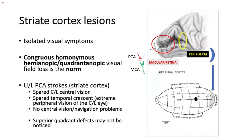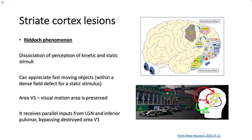If a lesion involves only the deepest part of the occipital lobe — subserving the most peripheral vision — it may lead to monocular vision loss in the contralateral eye, involving only the temporal crescent. This occurs because the temporal field is larger than the nasal field and has no corresponding nasal representation on the other side.